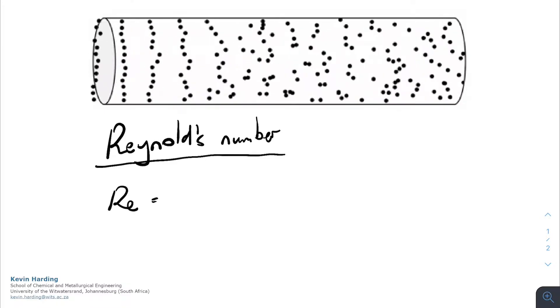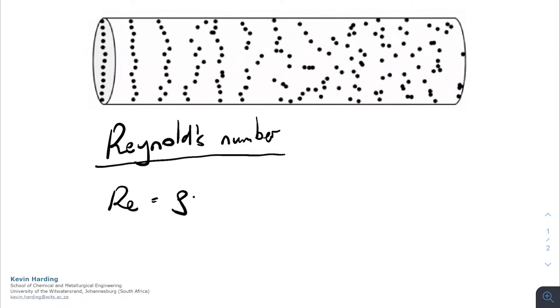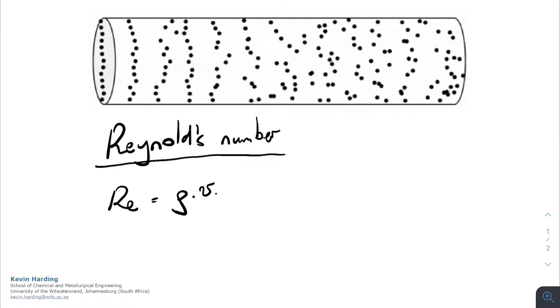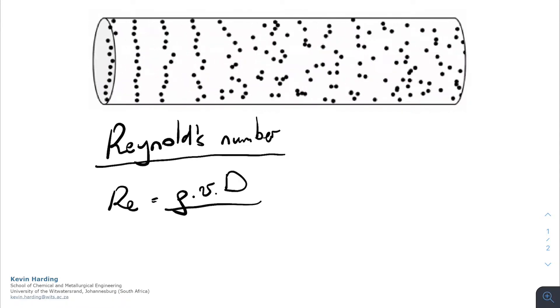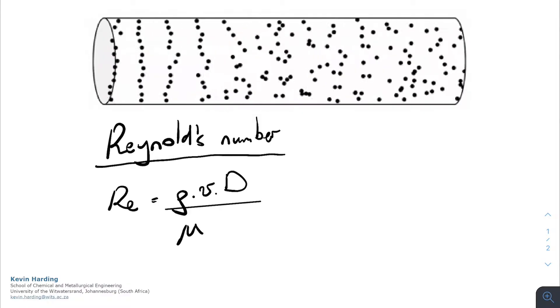It is defined as Re, or sometimes NRe, as the density multiplied by the linear velocity multiplied by the diameter of the pipe divided by the viscosity.